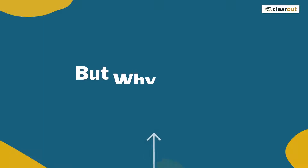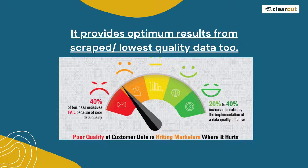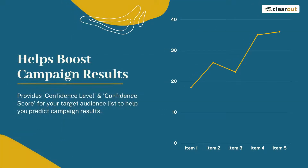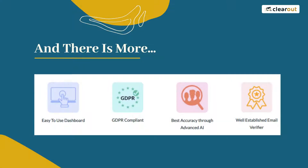But why should you go with Clearout email finder? To get results from any data — even scraped or low quality data. The results are backed with confidence scores that can help you anticipate and analyze the performance of campaigns. In addition, it is very simple to use, complies with all data protection laws, and is already a top email validation and verification tool.